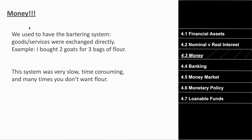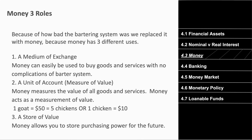In the past we used the bartering system — exchanging goods and services directly. For instance, trading two goats for three bags of flour. There are lots of problems with this: it's slow and time consuming, and the person with the goats might not want flour anyway. There are a lot of other problems too, so to resolve this we invented money.